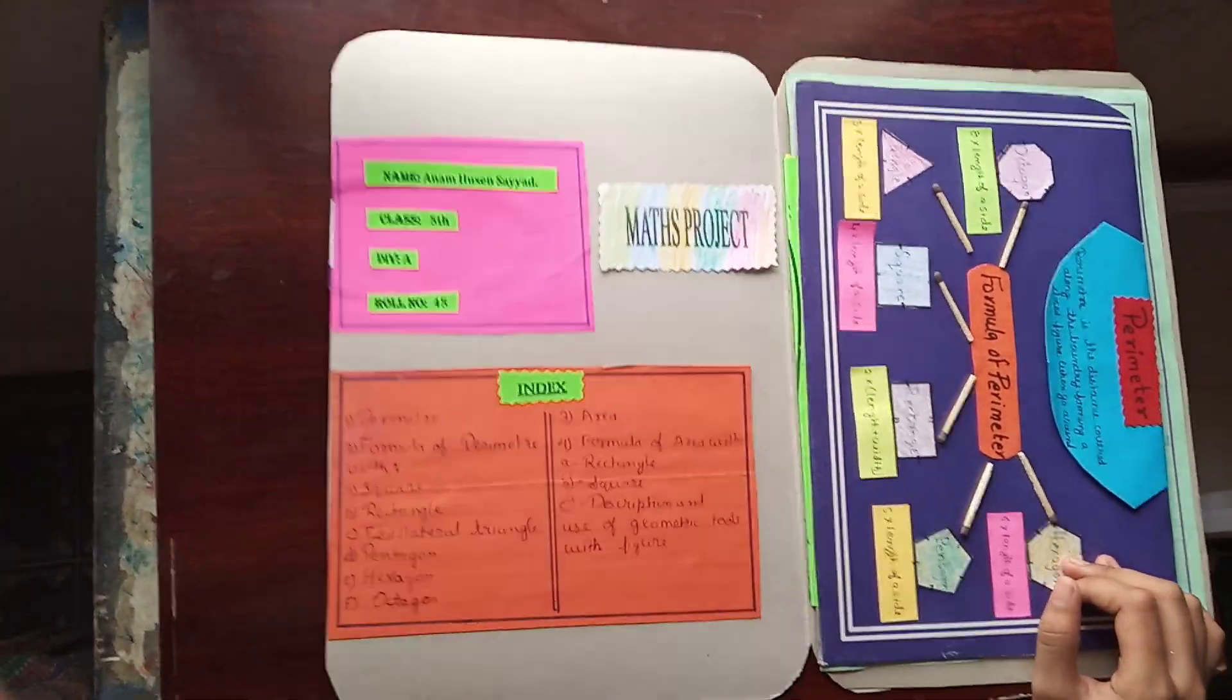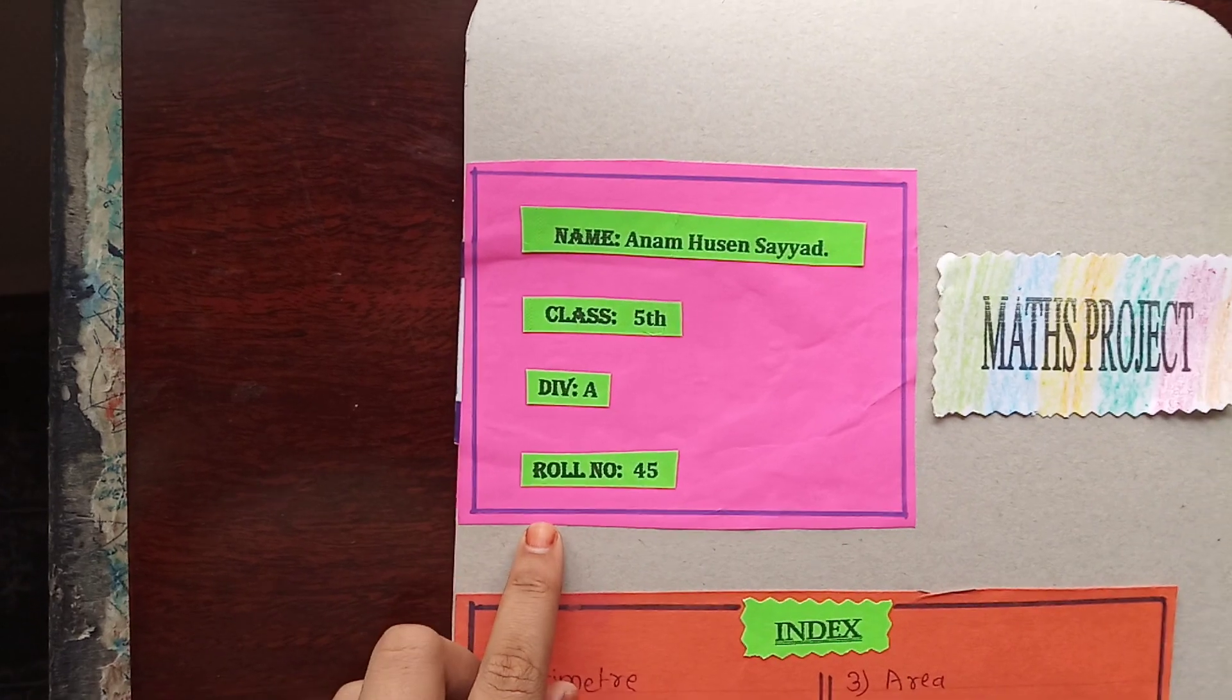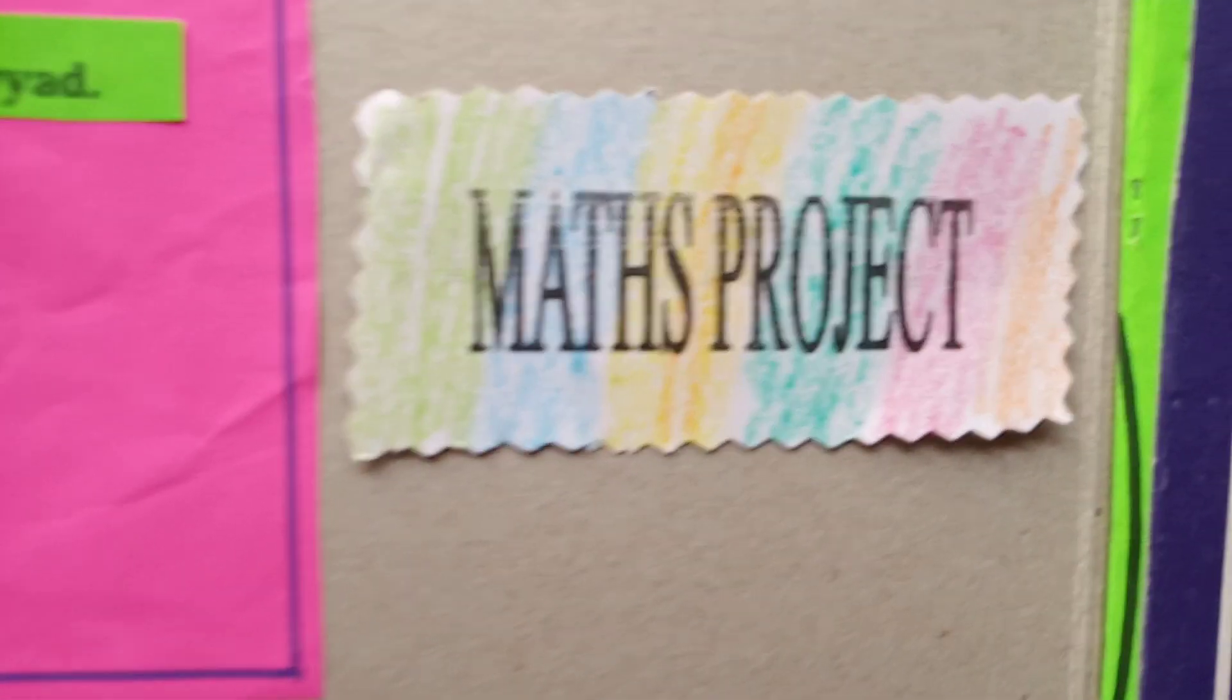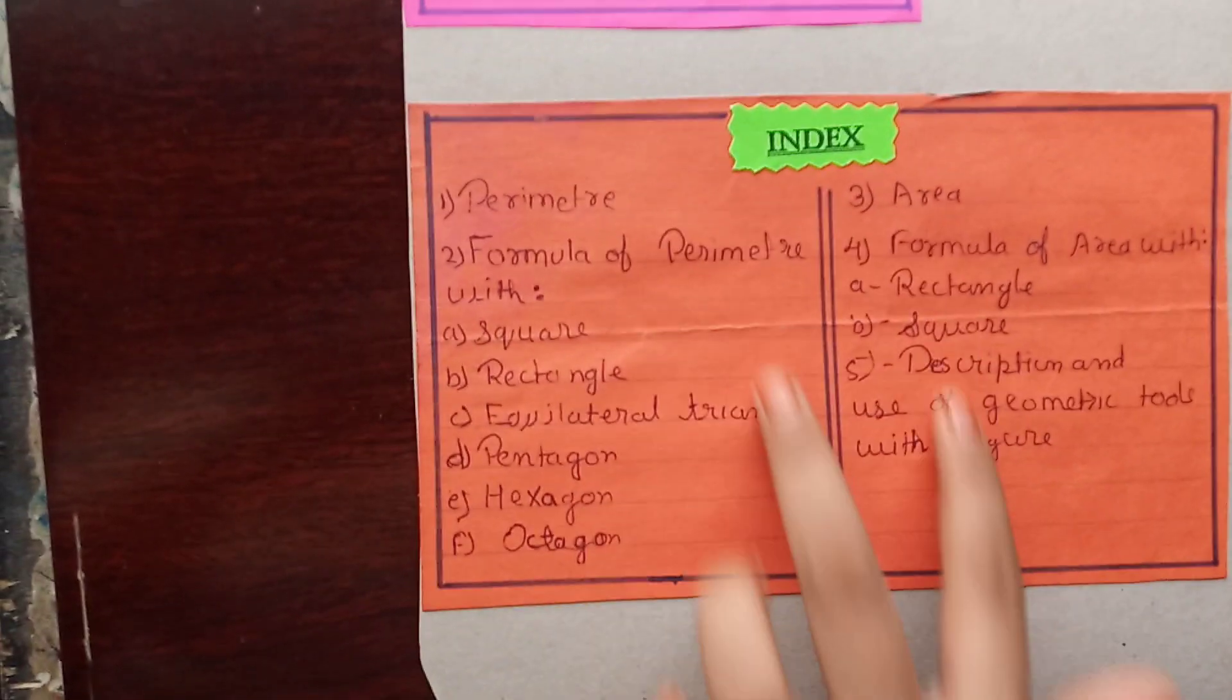And here is the name, class, division and roll number. And here is the index.